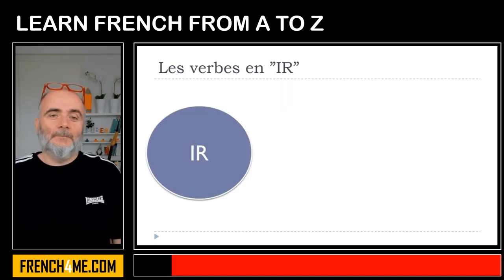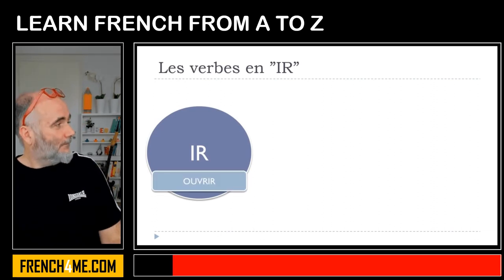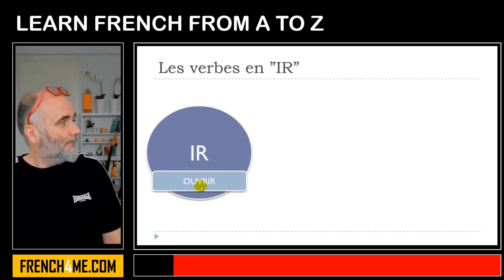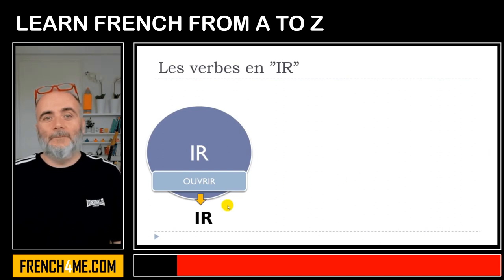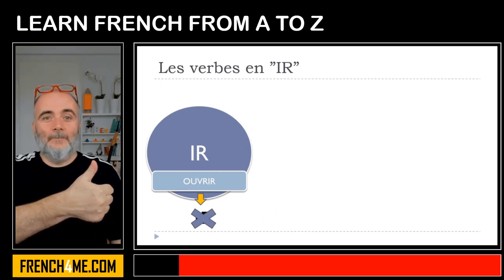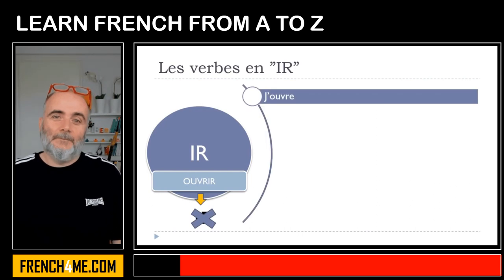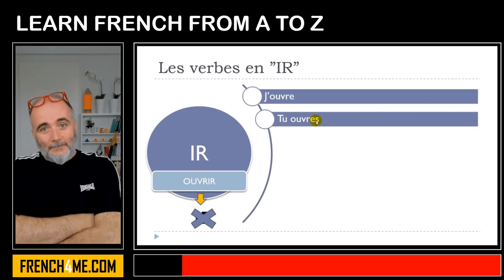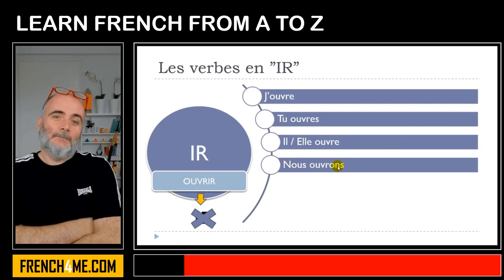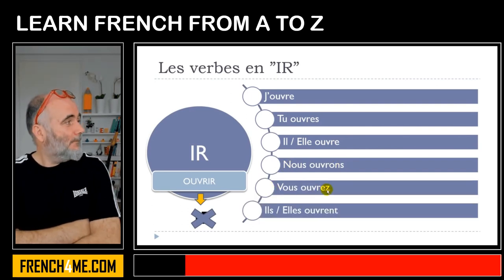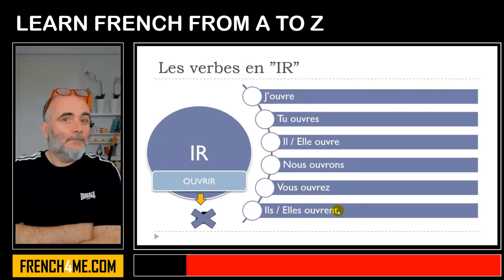So the verbs ending with IR — I thought it might be interesting to take the verb ouvrir. Ouvrir means to open, so it's quite useful. The idea is that this final IR will be taken away to get the stem, the root. And so after that you will get: j'ouvre, tu ouvres, il ouvre, elle ouvre, nous ouvrons, vous ouvrez, ils ouvrent, elles ouvrent.